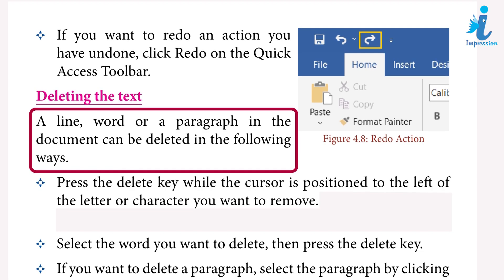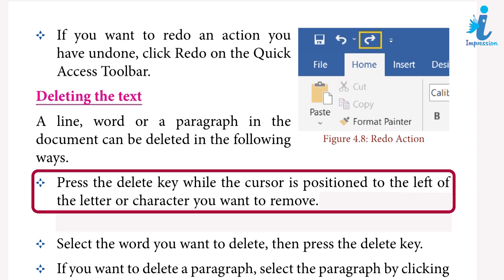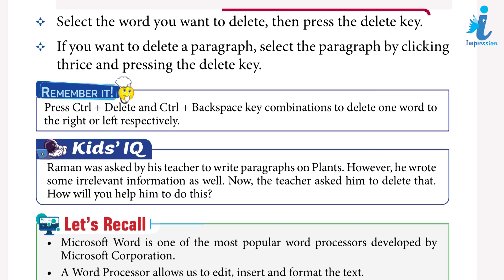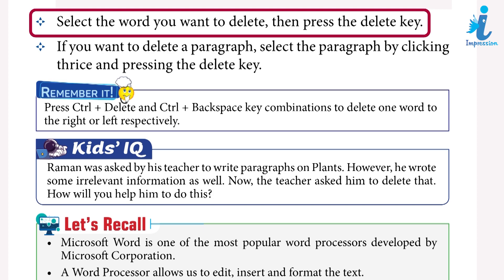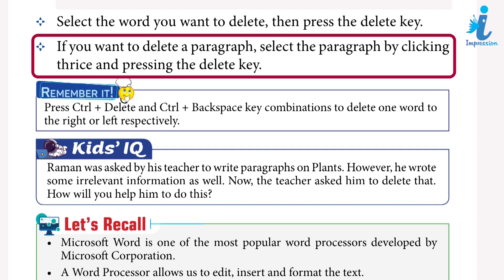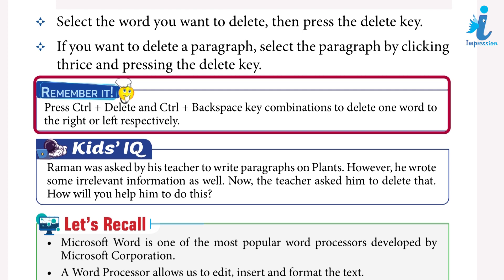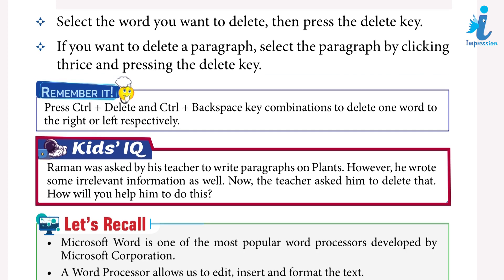Deleting text: a line, word, or paragraph in the document can be deleted in the following ways. Press the Delete key while the cursor is positioned to the left of the letter or character you want to remove. Select the word you want to delete, then press the Delete key. To delete a paragraph, select it by clicking thrice and press the Delete key. Press Ctrl+Delete and Ctrl+Backspace to delete one word to the right or left respectively.